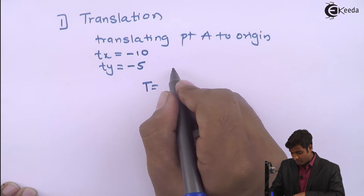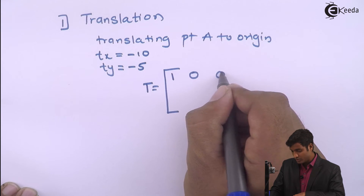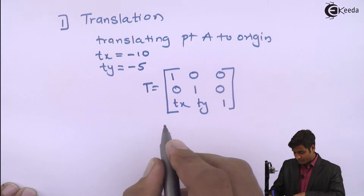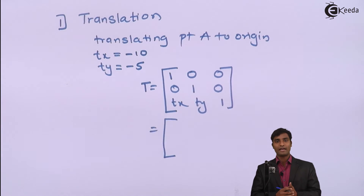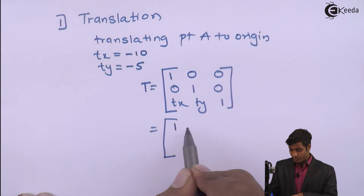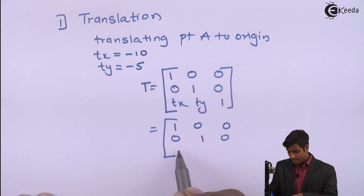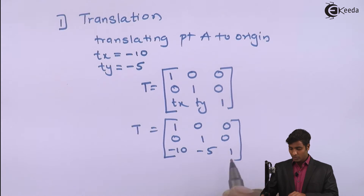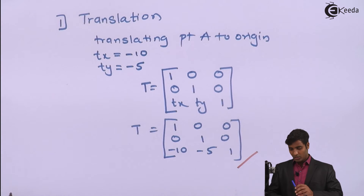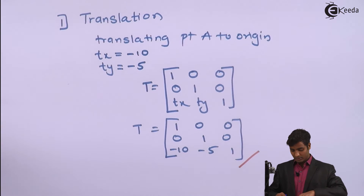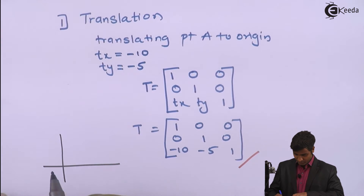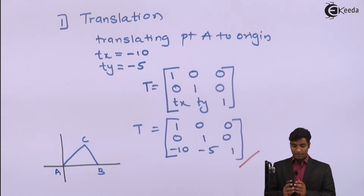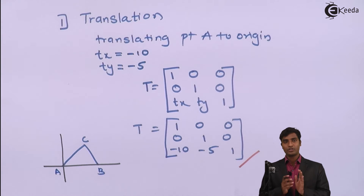We know the standard matrix for translation is [1, 0, 0 / 0, 1, 0 / Tx, Ty, 1]. Replacing the values of Tx and Ty, the corresponding matrix becomes [1, 0, 0 / 0, 1, 0 / -10, -5, 1]. This is the matrix for translation. After performing this transformation, the figure moves accordingly, and we have successfully brought the triangle to the origin.